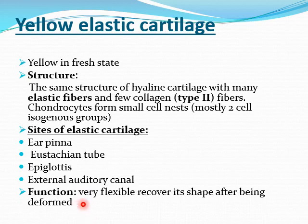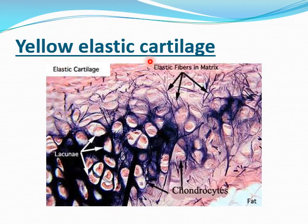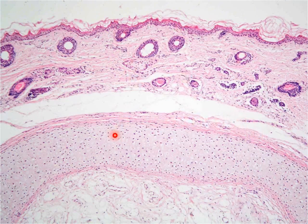The function of elastic cartilage is to give flexibility — it recovers its shape after being deformed. For example, if you deform the ear pinna and release it, it restores its shape. Under the light microscope you can see the elastic fibers, chondrocytes, and the perichondrium. This is visible in the practical session as an ear pinna section showing skin, perichondrium, and elastic cartilage with less matrix and small cell nests.